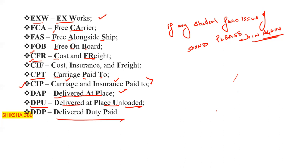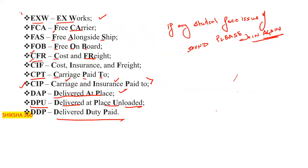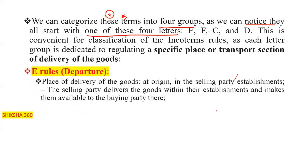These 11 terminologies can be categorized into four groups based on the first letter: one term starts with E, three start with F, four start with C, and three start with D — total 11 terms. This grouping as E, F, C, D is convenient for classification of Incoterm rules, as each letter group is dedicated to regulating a specific place, transport section, or delivery of goods.